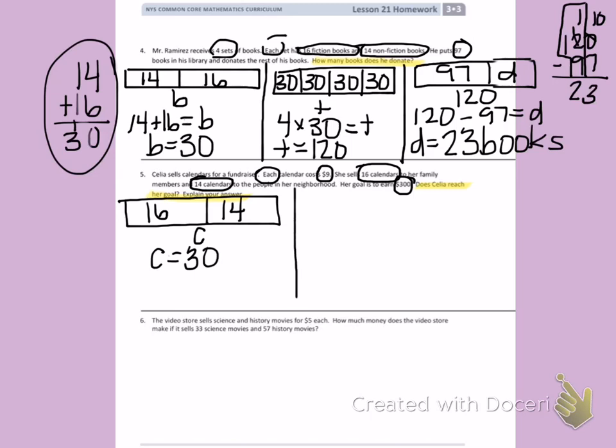Celia sold 30 calendars. Now I can figure out how much money she made because they each cost $9. I could make 30 boxes but I know my groups are 30 and in each box I would put 9. That would give me my total number of money.